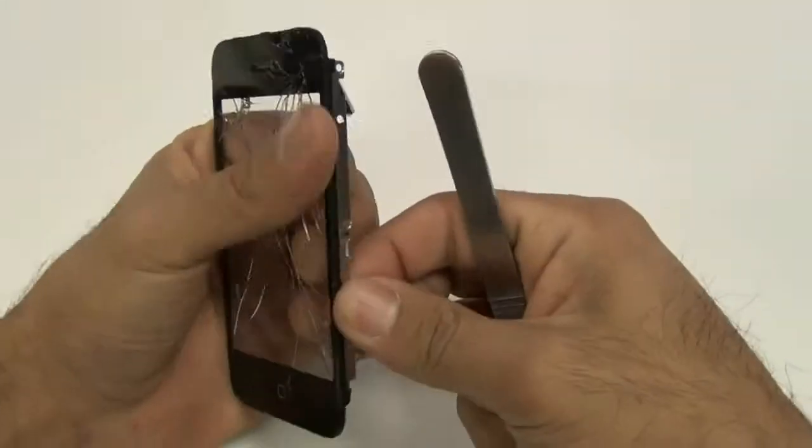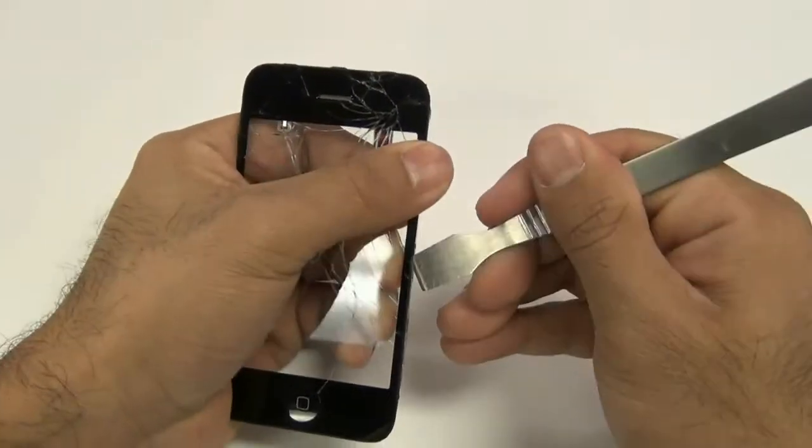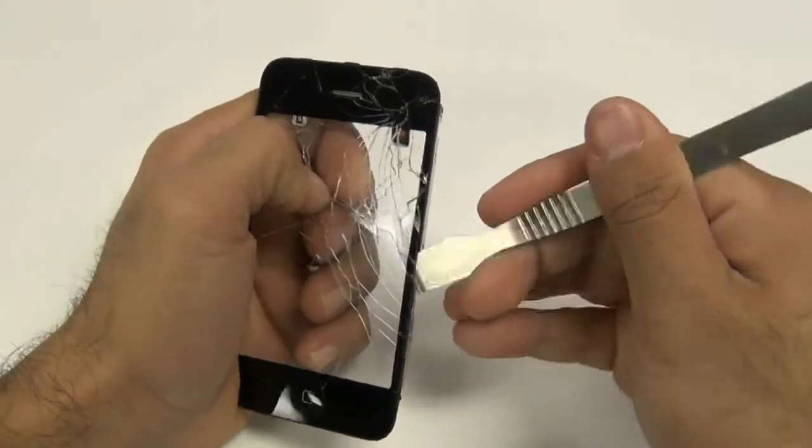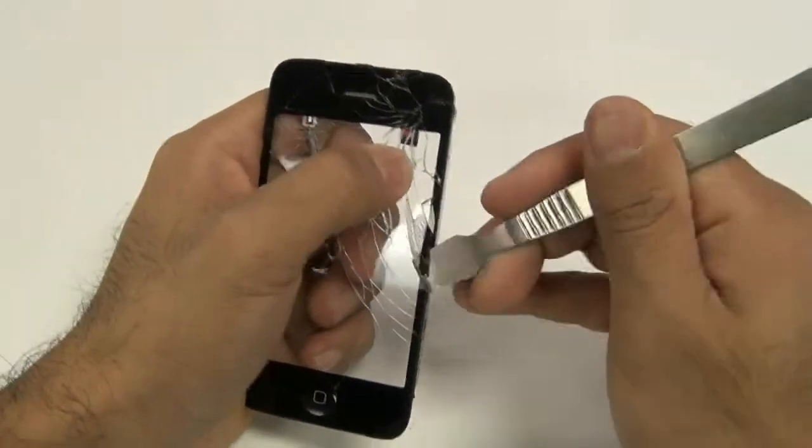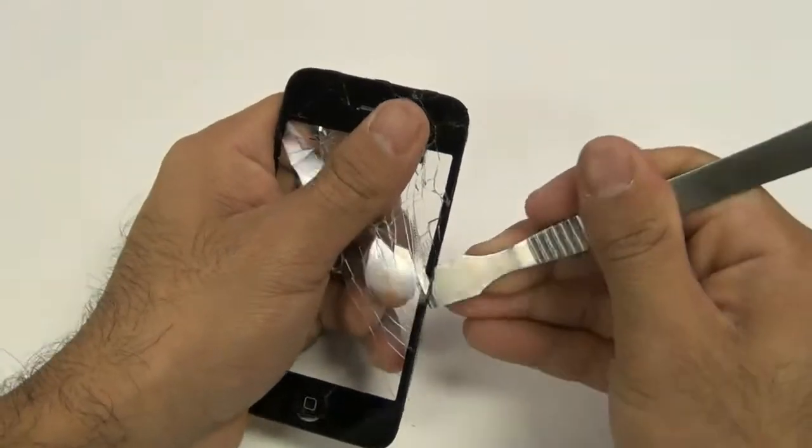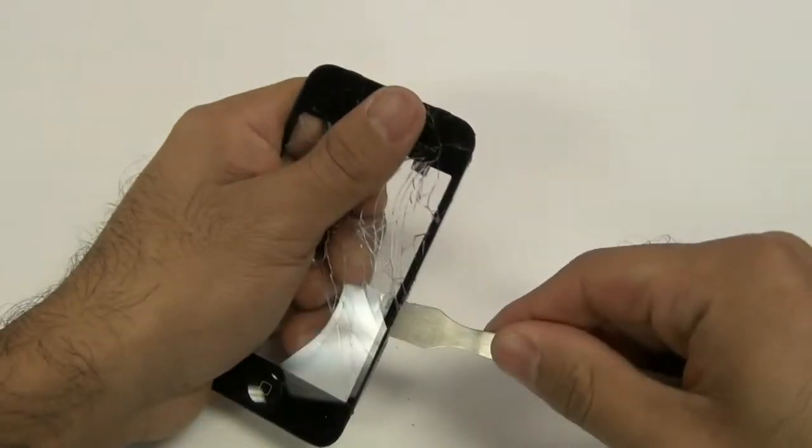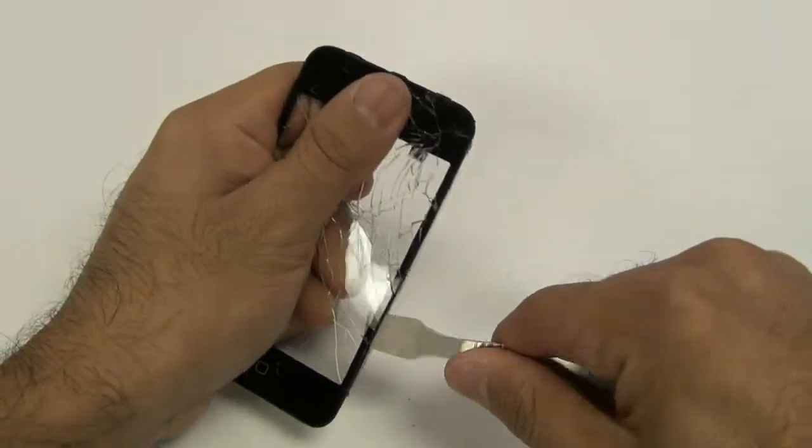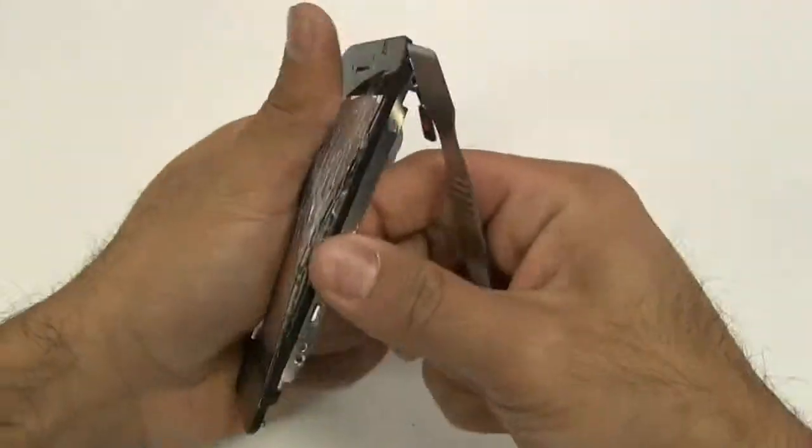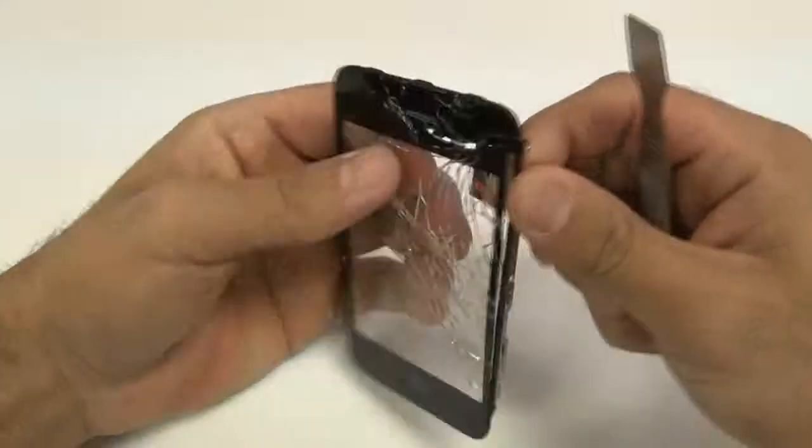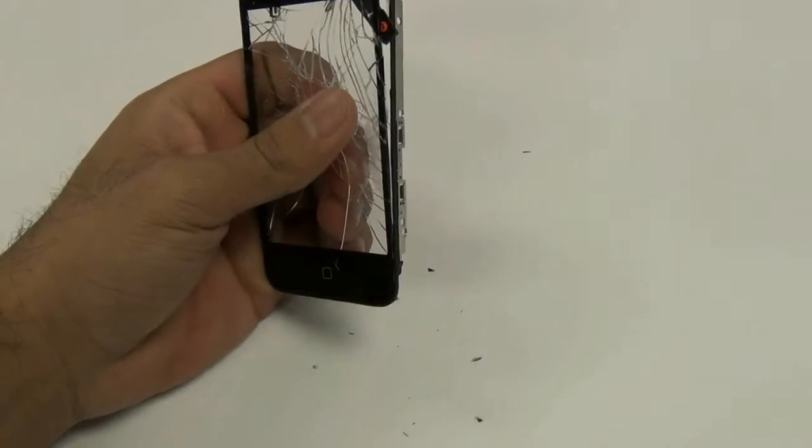Next, using a spudger or pry tool, you will want to go ahead around the sides of your touchscreen, removing the actual glass from the mid-frame. If it does not come off very easily, go ahead and use your heat gun to heat up the adhesive a little bit more to make the removal a little bit easier.